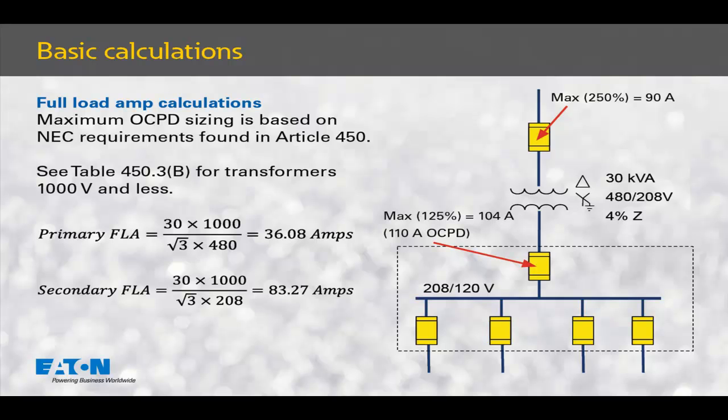The maximum size of the primary overcurrent protective device is 36.08 amps multiplied by 2.5, or 90 amps. The maximum secondary main overcurrent protective device is 83.27 amps multiplied by 1.25, which is 104 amps. We can't purchase a 104 amp fuse, so we go to the next higher standard overcurrent protective device size, which is a 110 amp fuse. The standard overcurrent protective device sizes can be found in Article 240 of the National Electrical Code.